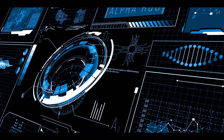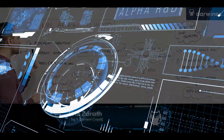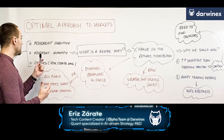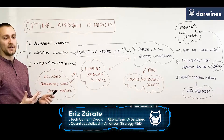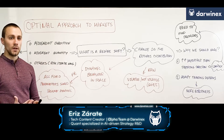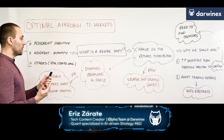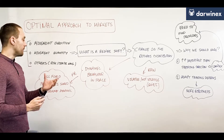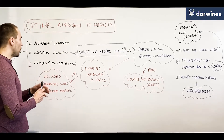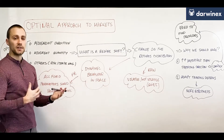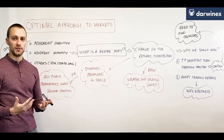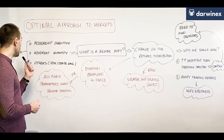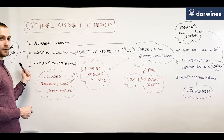Starting from first principles, we need to create a model that is able to predict movement direction. At the same time, we need to predict movement quantity, and finally we have others like risk and trade management and even position sizing, to be able to create that optimal alpha that we can see here.